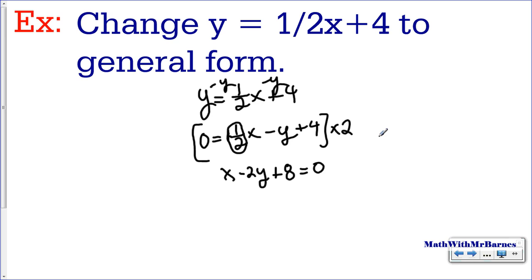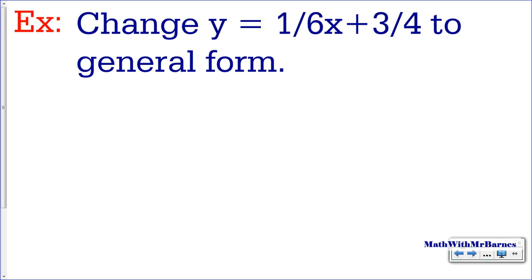Let's look at the situation where we have two fractions. I'll rewrite this. y equals 1 over 6x plus 3 over 4. Again, I'll subtract y from both sides. So I end up with 0 equals 1 over 6x minus y plus 3 over 4.